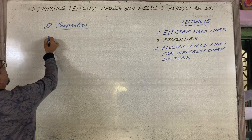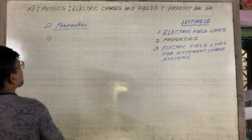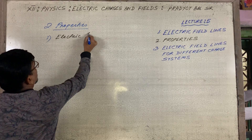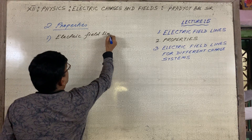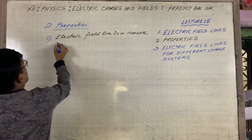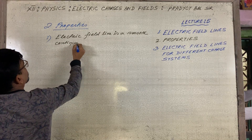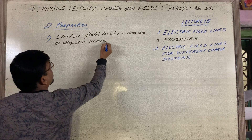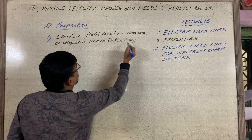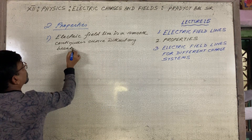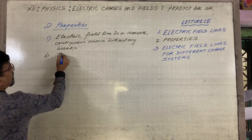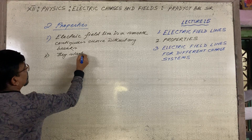Property number one: an electric field line is a smooth continuous curve without any breaks.